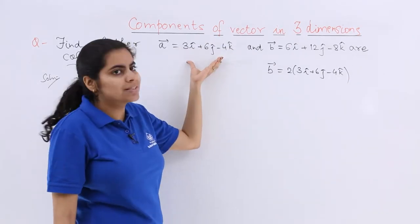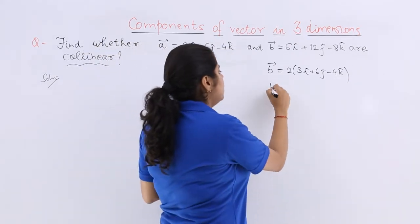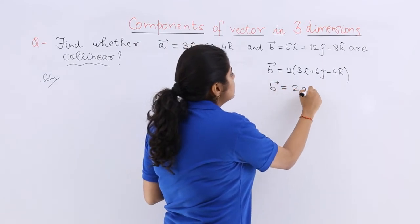Now 3, 6, and minus 4. That means b⃗ vector = 2 times a⃗ vector.